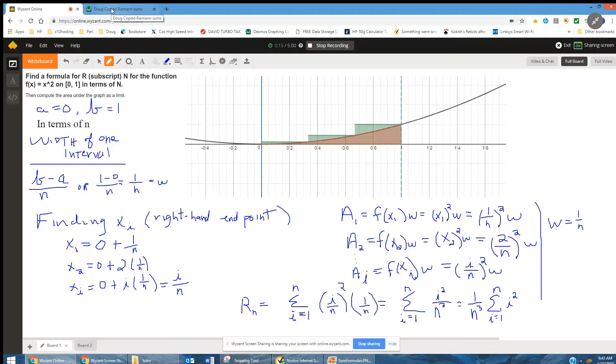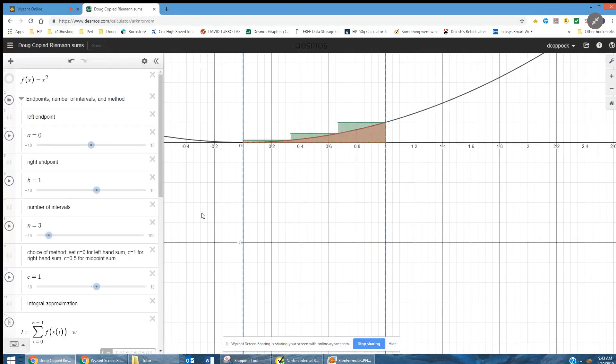First I want to go to the Desmos online graphing calculator to show you exactly what we're working on. f(x) is this function, f(x) equals x squared, and we're supposed to find a Riemann sum for the area under the curve from zero to one.